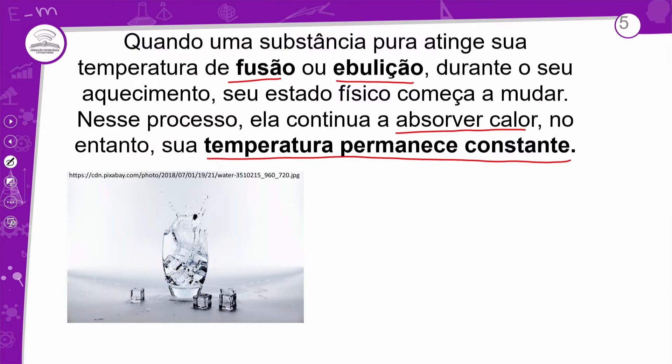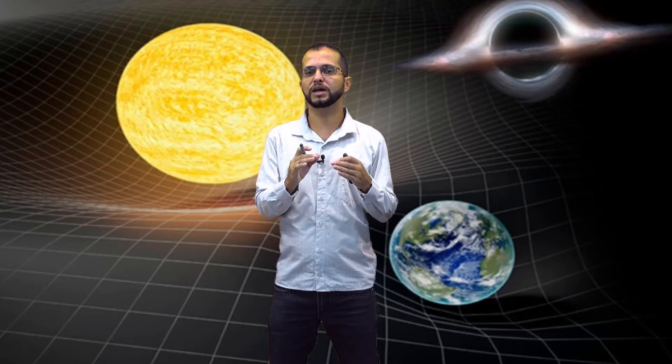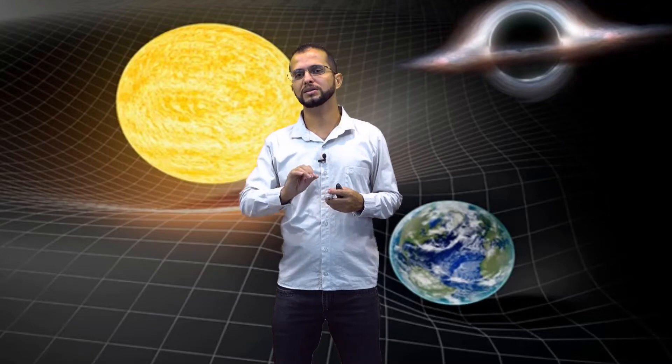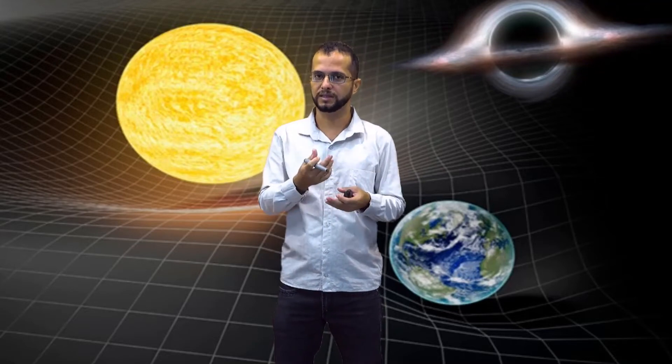Quando eu boto gelo no copo com água, ele vai começar a baixar a temperatura. A zero grau Celsius só estaria se você colocasse vários cubos de gelo isolado e ele começasse a derreter. Mas se você tem um refrigerante ou suco que não está tão gelado e coloca cubos de gelo, você vai aumentar a quantidade de água e o cubo vai absorver energia, esfriando o refrigerante um pouco. O cubo de gelo absorve energia do líquido e começa a derreter.